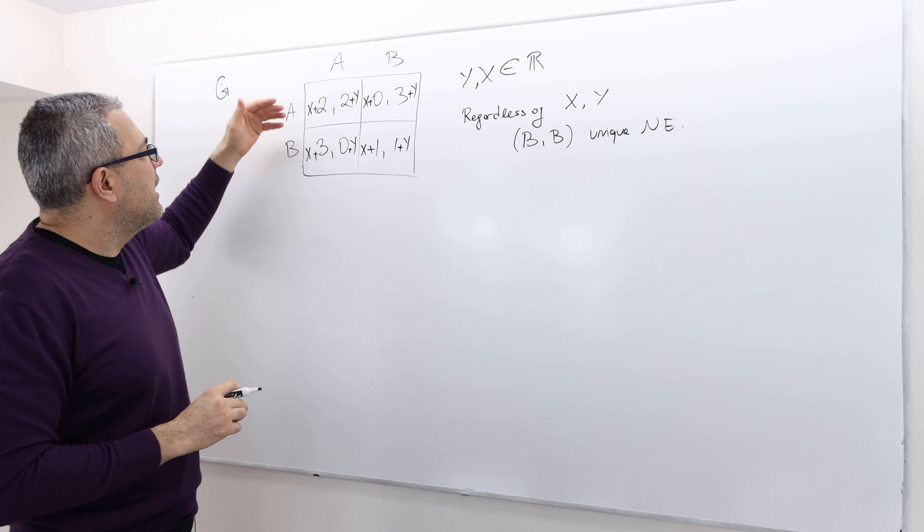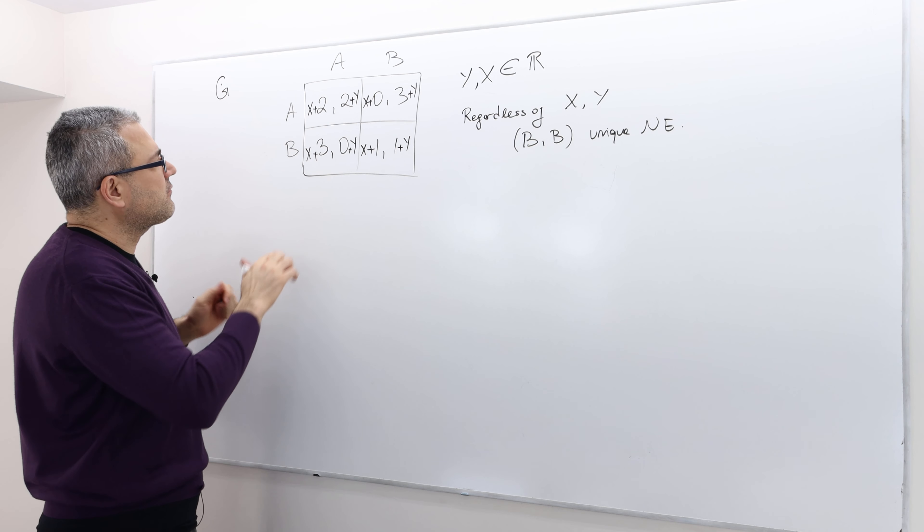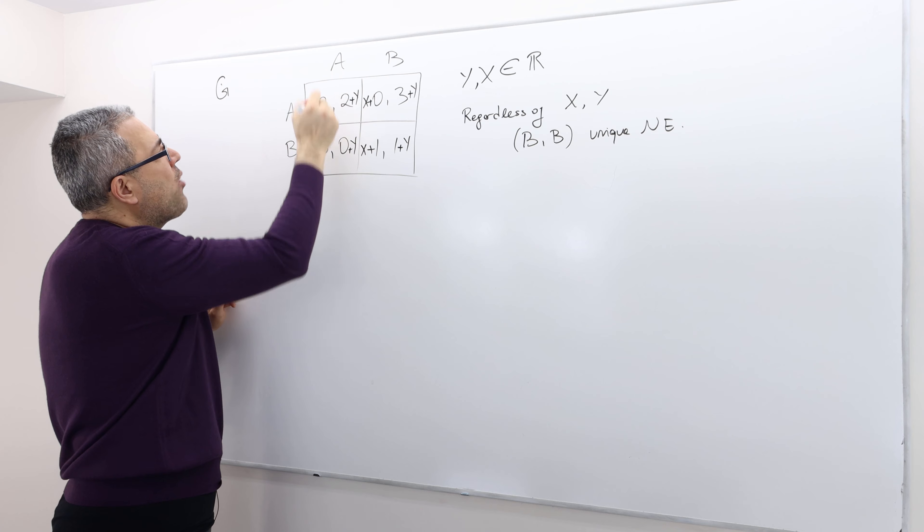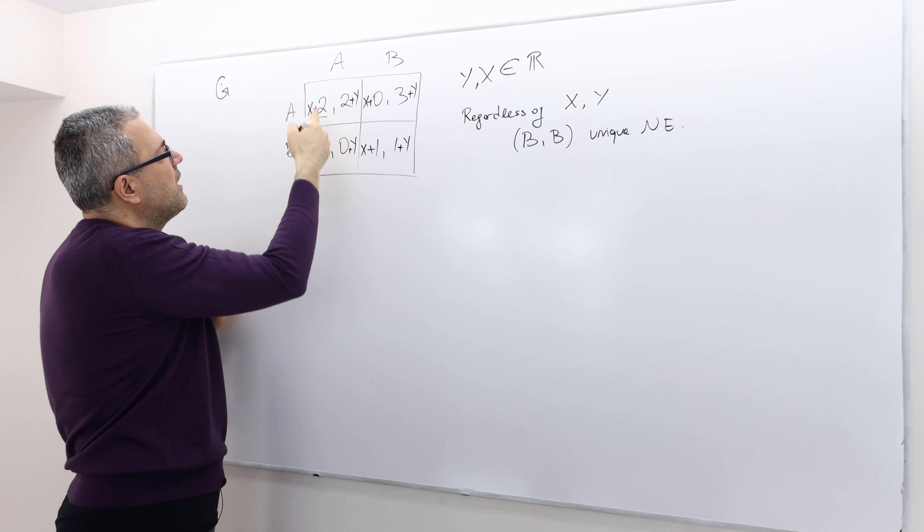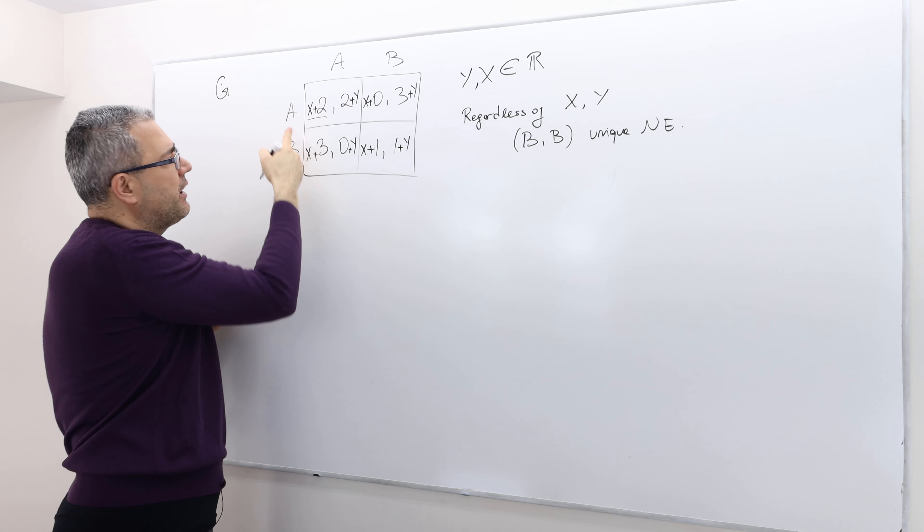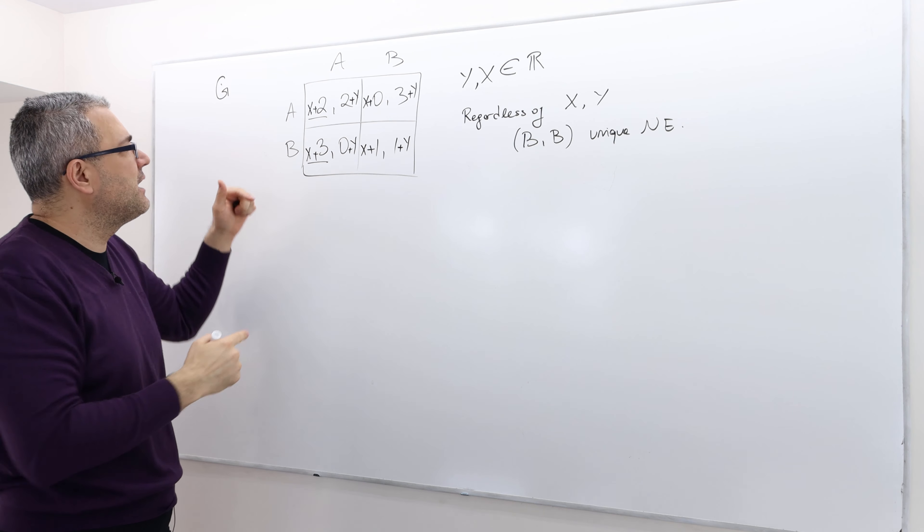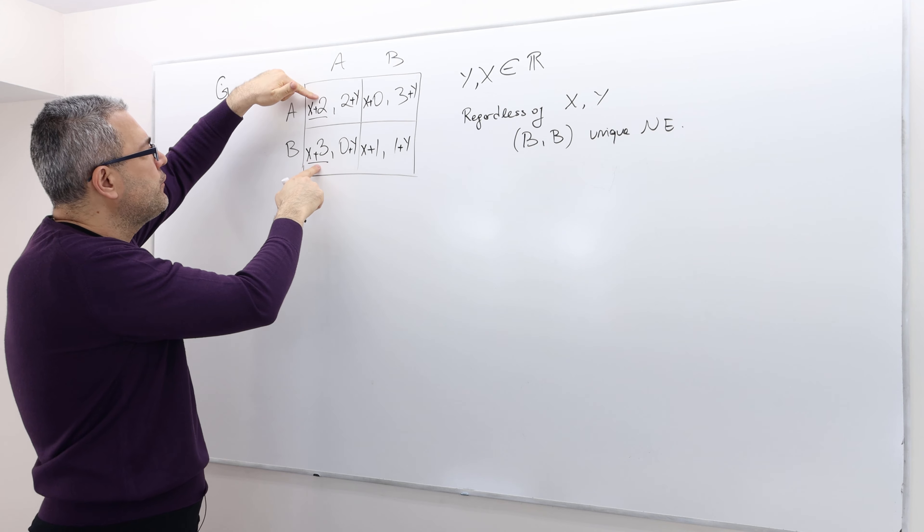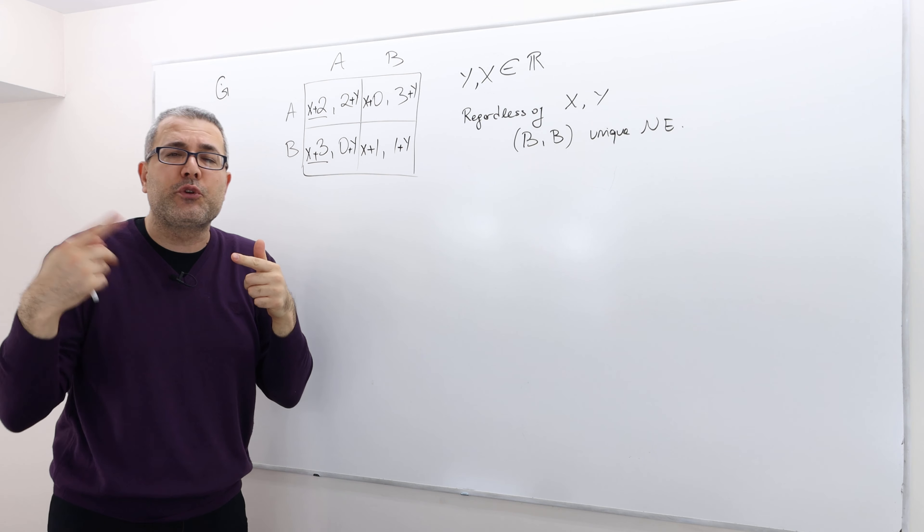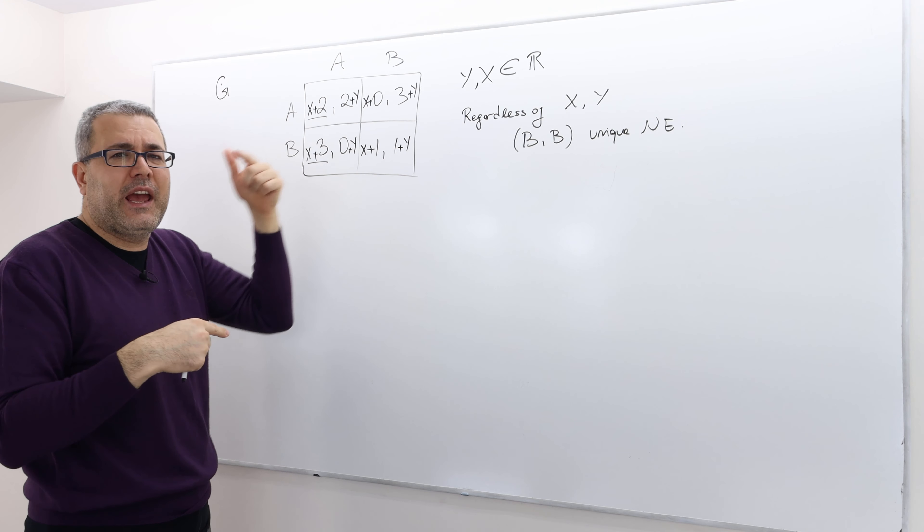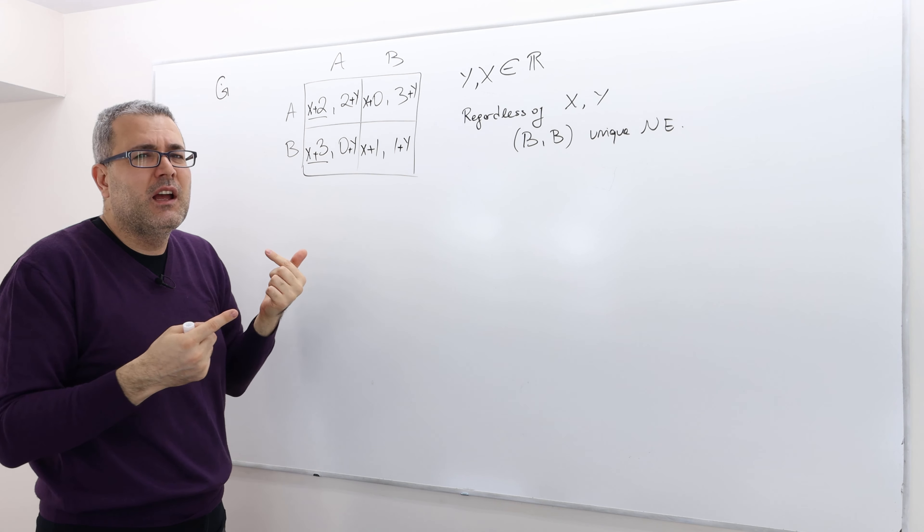How so? Well, if you compare, for example, A versus B. So when the opponent plays A, player one is going to get X plus two if he plays A and X plus three if he plays B. So X plus two versus X plus three. Previously, we were comparing two with three. Now we're comparing X plus two with X plus three.